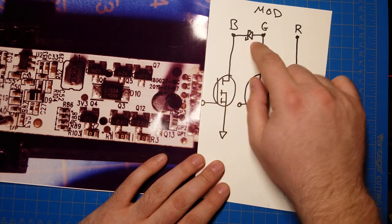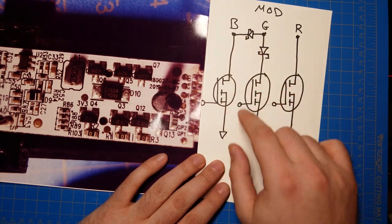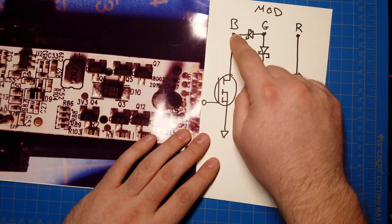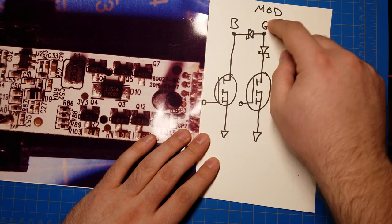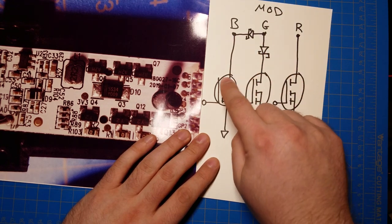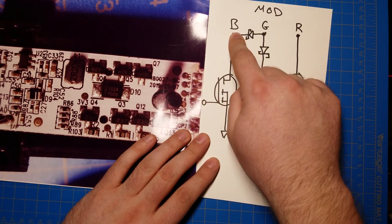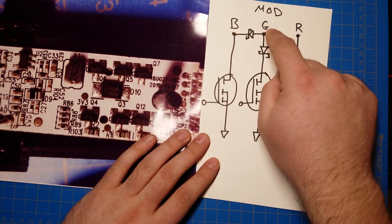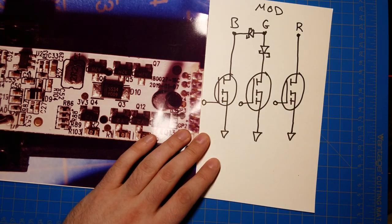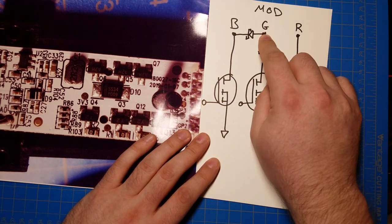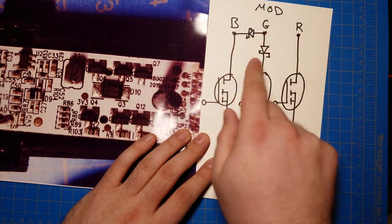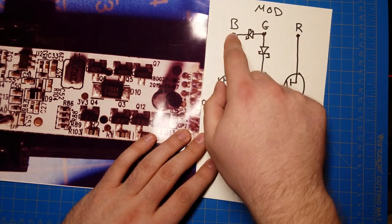The diode allows electricity only to flow in one direction. It doesn't allow electricity to flow in the opposite direction. So what this means is when the blue channel turns on, the electricity through the green channel also has a path through the blue MOSFET to ground. So when blue turns on, both the blue and green LEDs get power through this one MOSFET.